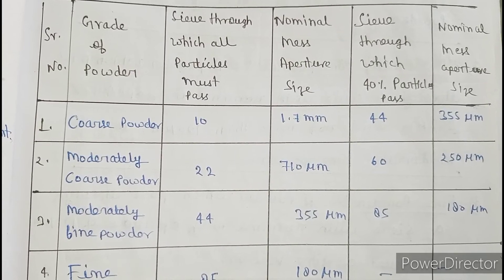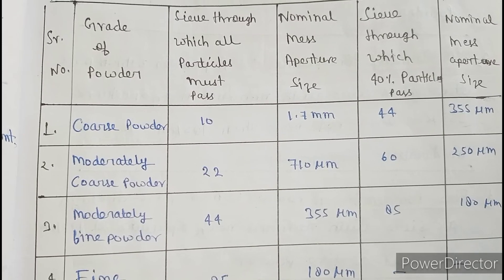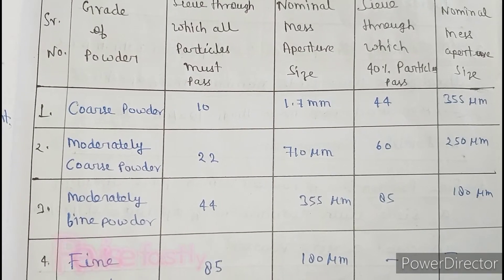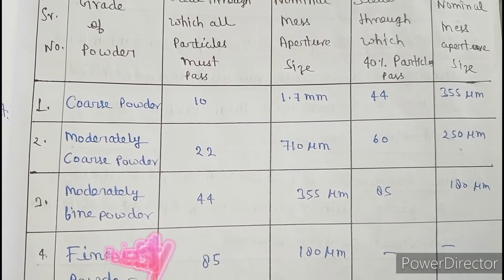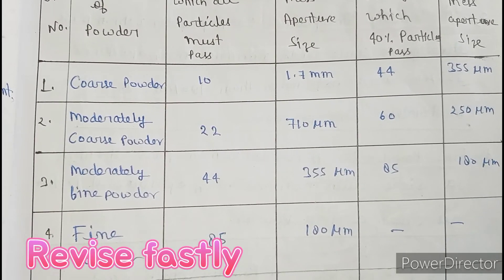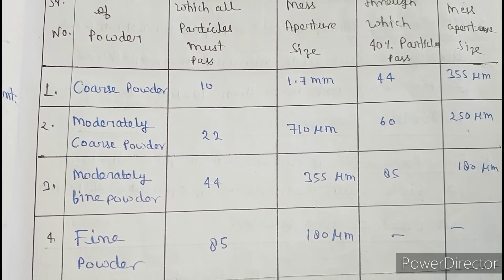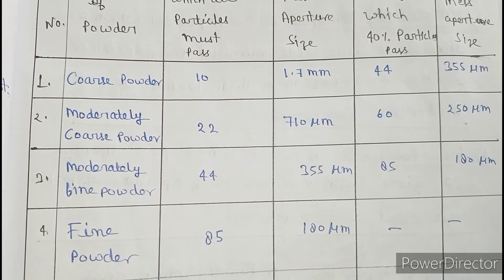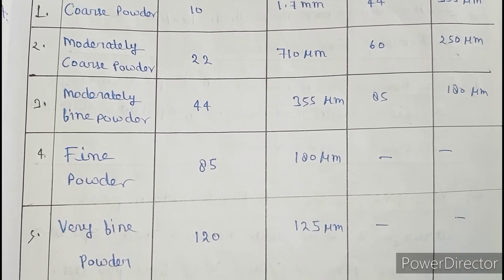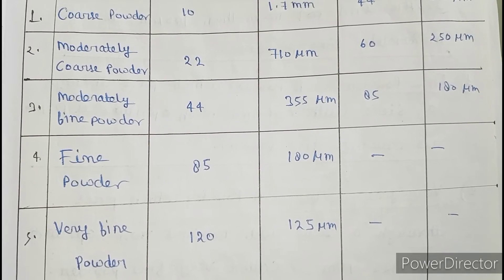For coarse powder: sieve No. 10, 1.7 mm; 40% pass through 355 micrometers. Moderately coarse powder: No. 20, 710 micrometers; 60% pass through 250 micrometers. Moderately fine powder: No. 44, 355 micrometers; 85% pass through 180 micrometers. Very fine powder: No. 120, 125 micrometers for the nominal mesh aperture size.